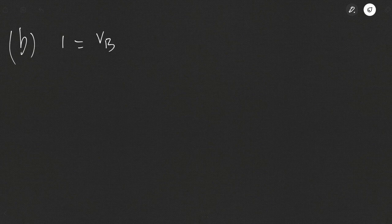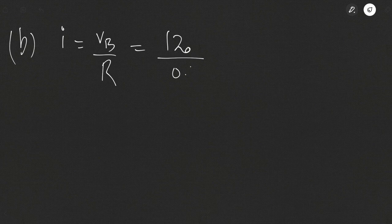For part B, the maximum starting current: we have derived that I equals VB divided by R initially, when induced EMF is zero. VB is given as 120 volts, divided by R of 0.3 ohms, giving 400 amperes. For part C, we need the steady-state angular velocity at no load.